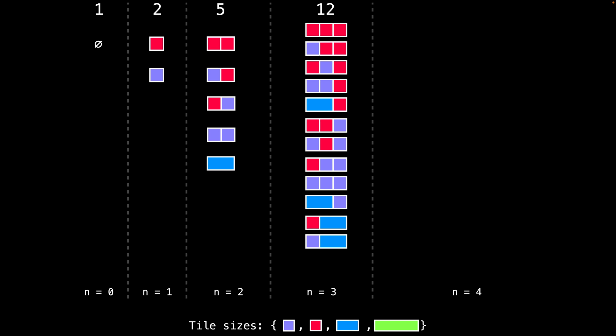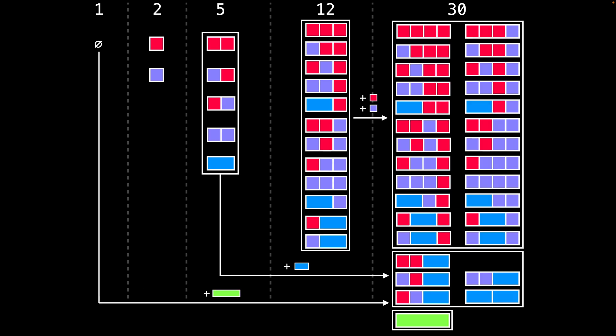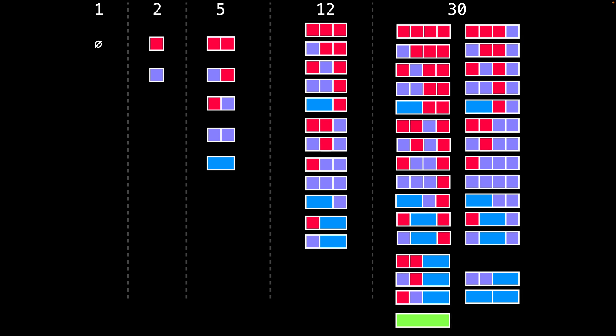Based on the previous example, try and determine how many ways there are to tile a board of length four. Pause the video if you need more time. In order to find all the tilings for a board of length four, append blocks to the existing solutions from previous board sizes which result in a board of length four. So in total, there are 30 ways to tile a board of length four.